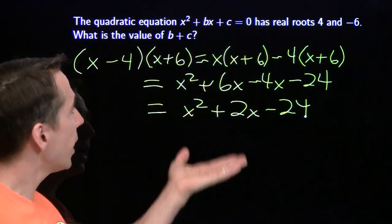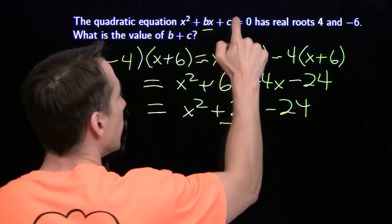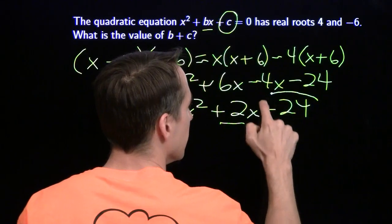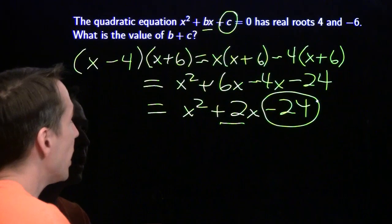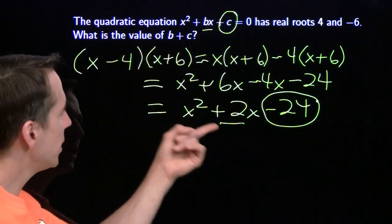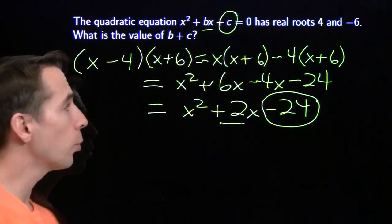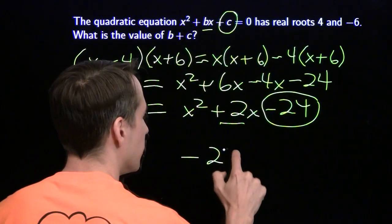So now, this is our quadratic. We look back up here and we see that b is 2 and c is negative 24. We're just lining up the coefficients. That's what we do when this quadratic is the same as that quadratic. So b is 2, c is negative 24. We add those two together to get b plus c is negative 22.